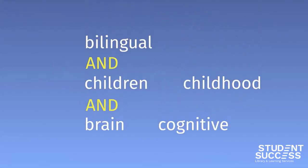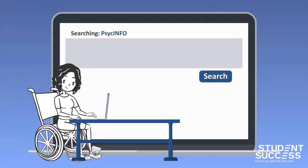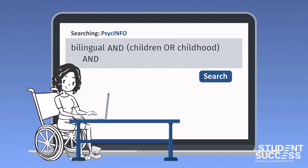Library databases do this with the use of OR and parentheses. Anytime you use an OR, you want to make sure you nest the related words in parentheses. In this example, you are telling the database to look for resources that include the word bilingual AND the word children OR childhood plus the word brain OR cognitive.